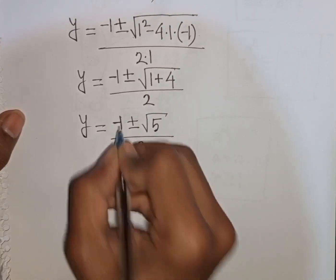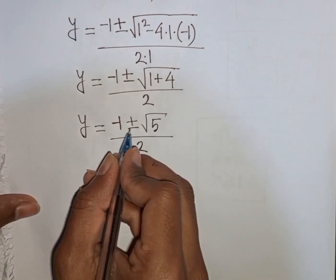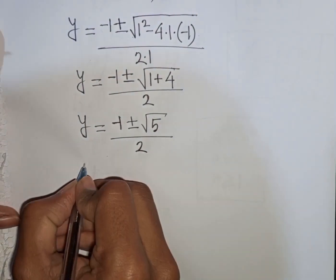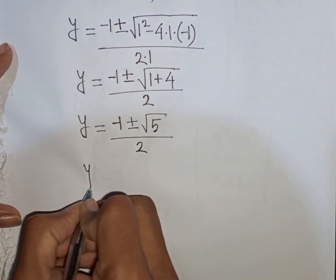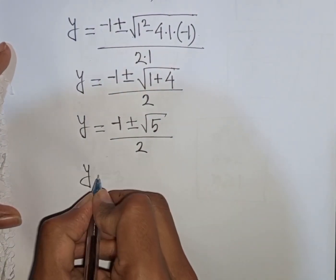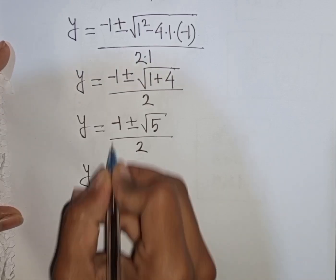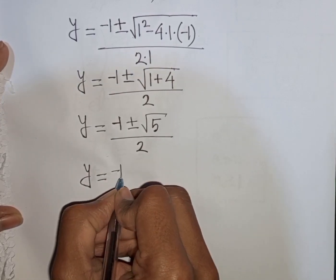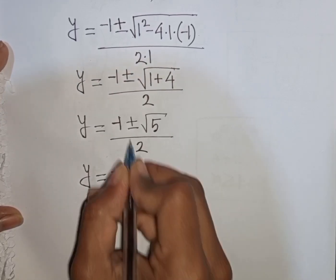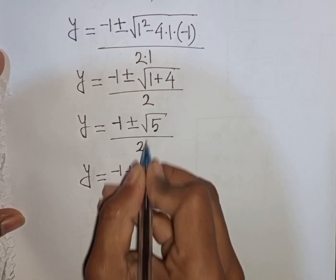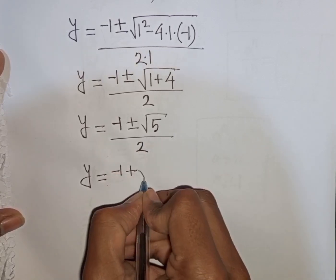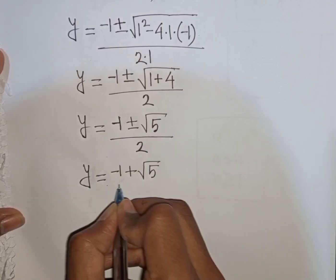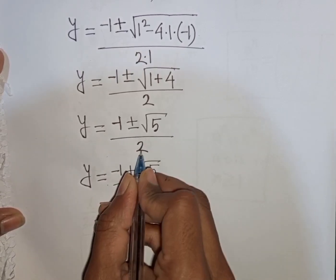So y equals (minus 1 plus square root of 5) divided by 2, or y equals (minus 1 minus square root of 5) divided by 2.